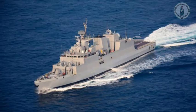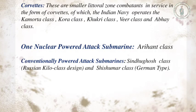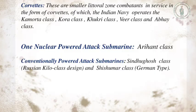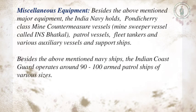Under corvettes, the Navy has the Kamorta, Kora, Khukri, Veer, and Abhay classes. There is one nuclear-powered attack submarine of the Arihant class and conventionally powered attack submarines of the Sindhughosh and Shishumar classes. The Navy also has the Pondicherry-class mine countermeasure vessel — a minesweeper — known as INS Bhatkal, along with patrol vessels, fleet tankers, and various support ships.